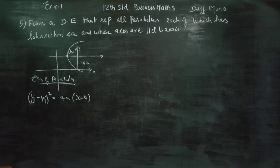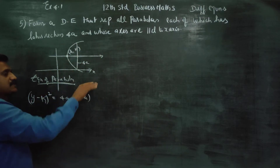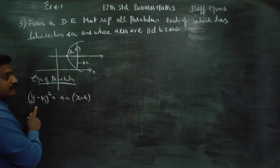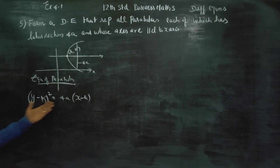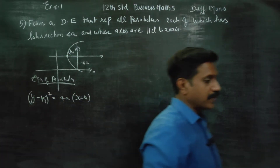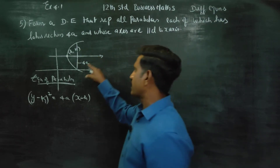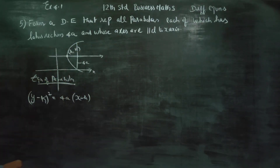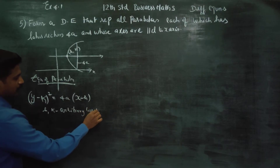Now, for the parabola parallel to the x-axis, the x and y terms are arranged along the path. A is not the question — A is fixed. The parabola has latus rectum 4a. H and K are the arbitrary constants. Since there are 2 arbitrary constants, we need to differentiate twice.